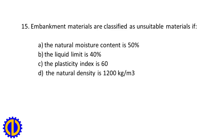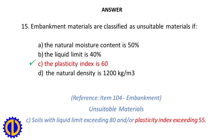Question 15. Embankment materials are classified as unsuitable materials if: A. The natural moisture content is 50%. B. The liquid limit is 40%. C. The plasticity index is 60. D. The natural density is 1,200 kg per cubic meter. Answer: C. The plasticity index is 60. Reference: Item 104, Embankment, Unsuitable Materials. Soils with liquid limit exceeding 80% and/or plasticity index exceeding 55.